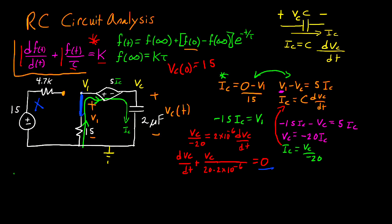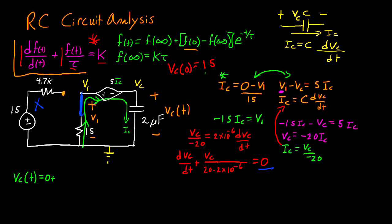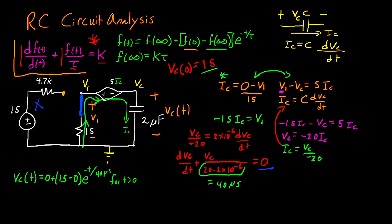We're now ready to write the equation for vc of t. The first term is f of infinity, which equals k times tau. Since k equals 0, f of infinity also equals 0. So vc of t equals 0 plus the initial condition of 15, minus 0, multiplied by e to the negative t divided by tau. Tau equals 40 microseconds, so the final answer is vc of t equals 15 e to the negative t divided by 40 microseconds, for t greater than zero.